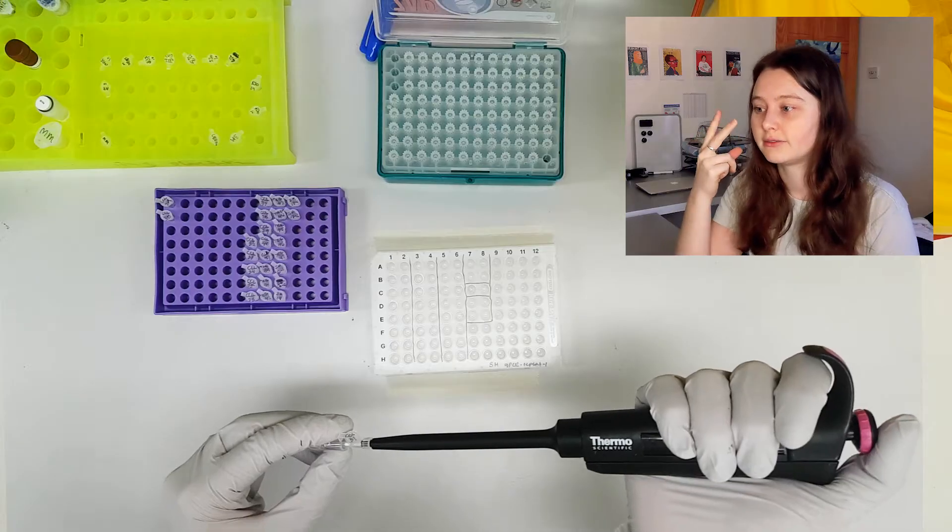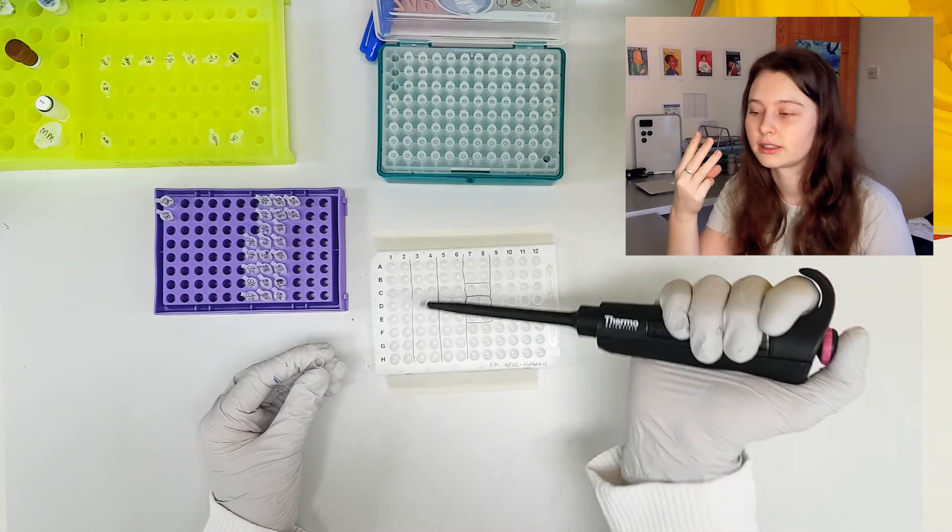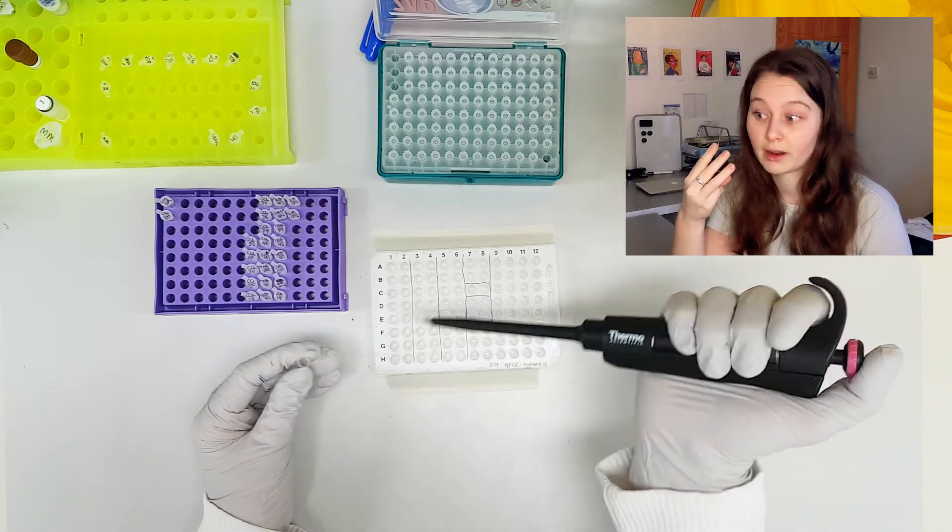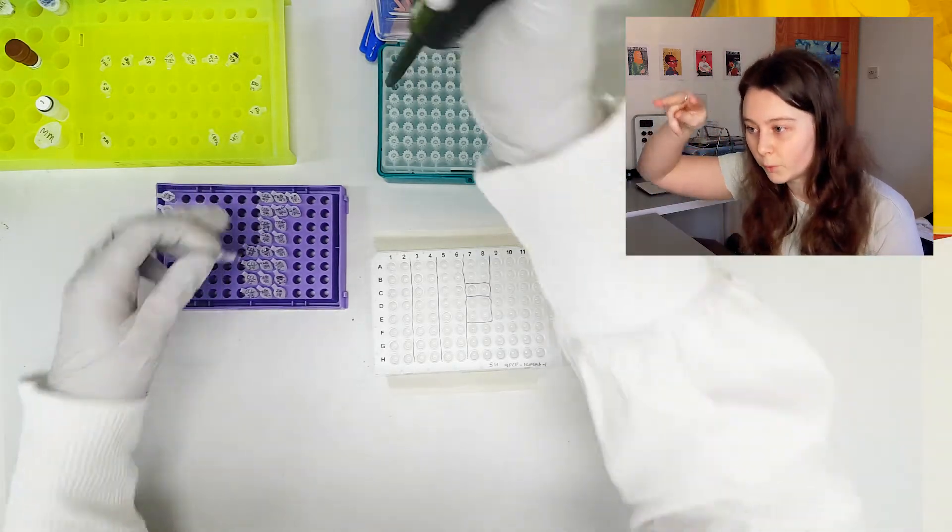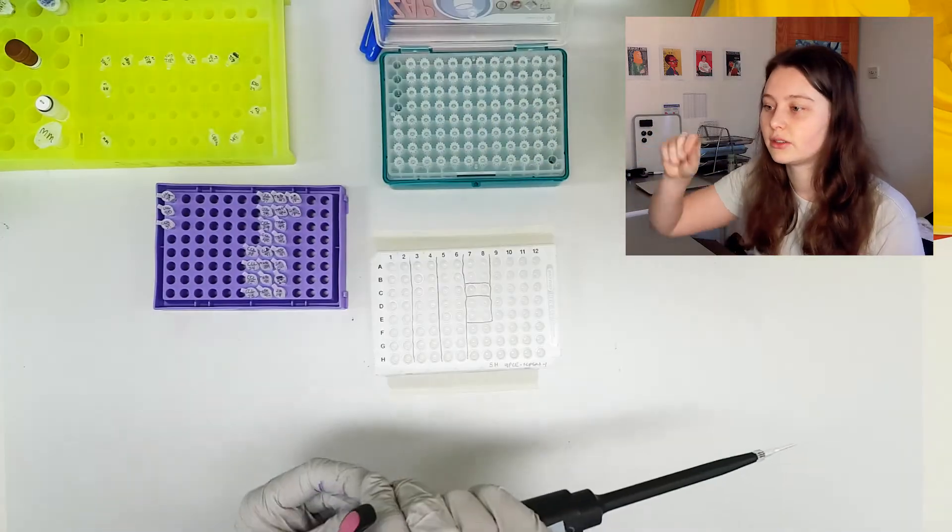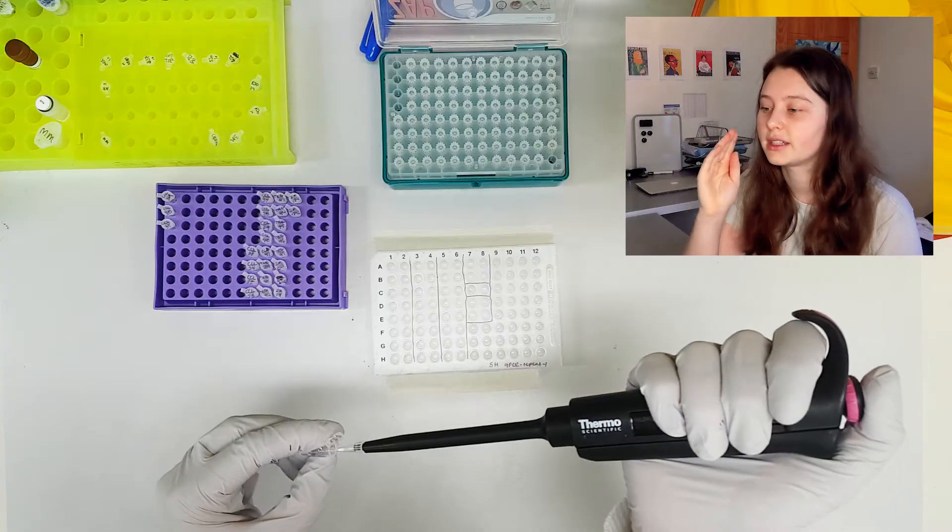So you can see I have two methods, or even three actually, of making sure it's going the right place. So the first one is that I've got that sharpie on the side of the wells to show where my samples are going in descending order, and the technical duplicates are by each other's side.